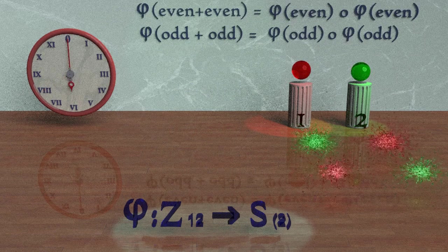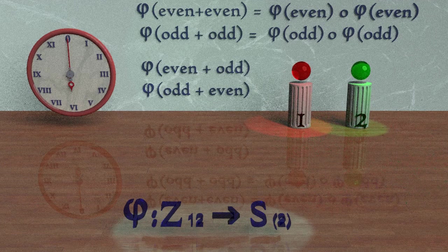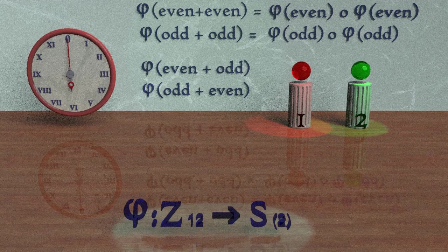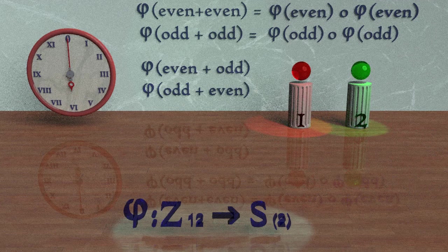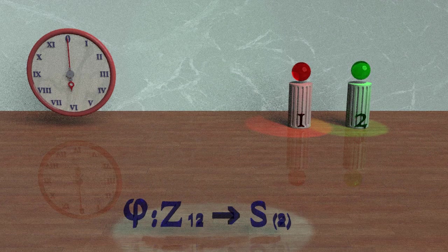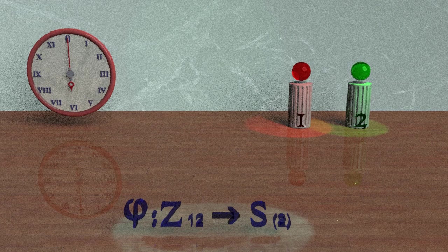This also gives us the same answer if we were to add the numbers first and then map over the answer, or if we map over the numbers and then perform the composition of functions in the second group. Now you can certainly pause the video here and see what you would get if you would perform the addition of an even integer and an odd integer in Z_12, and then map over phi the answer, or if you perform phi on the even and odd integer first, and then did the composition of functions in the group of permutations.